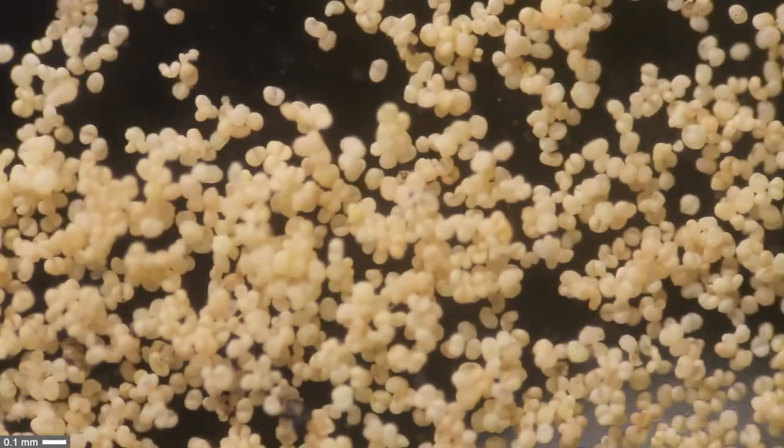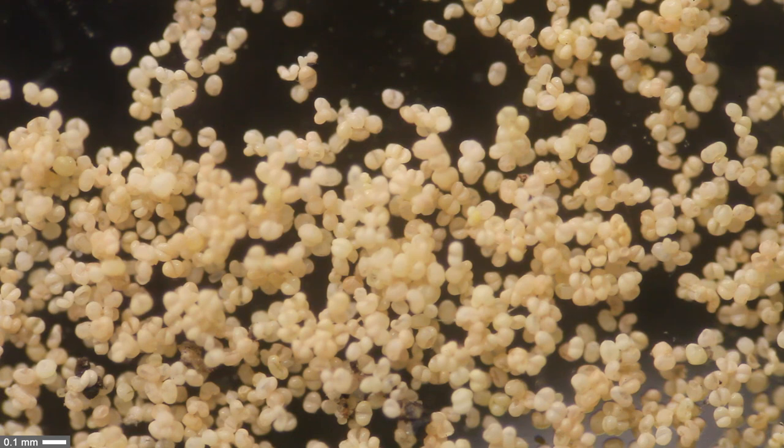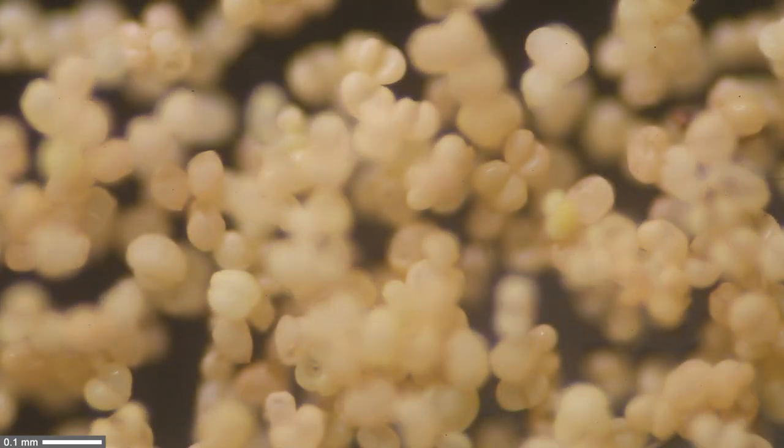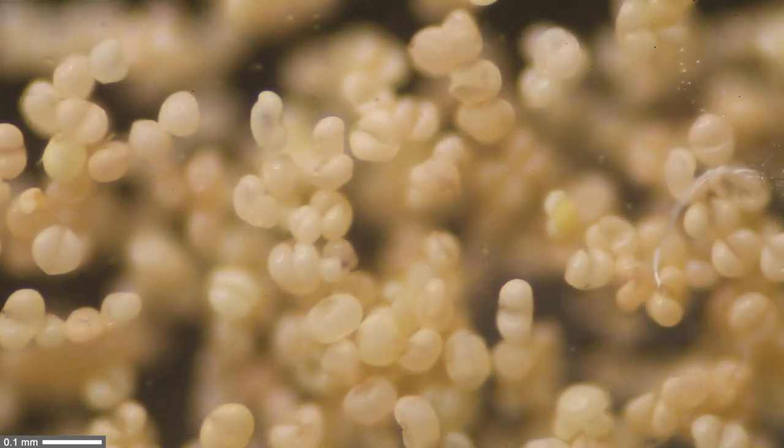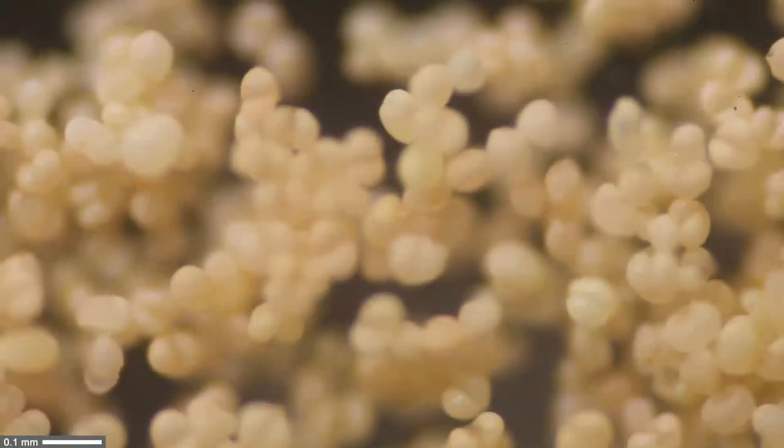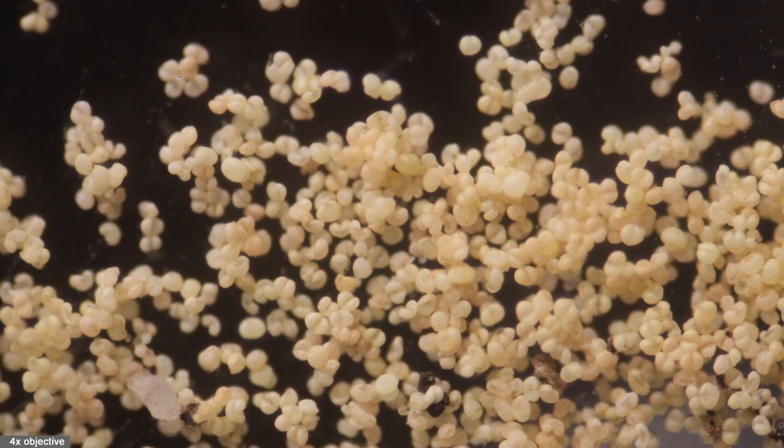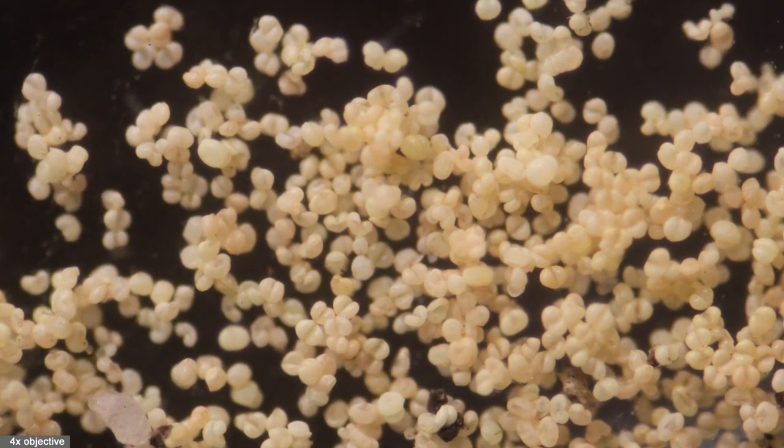That is also one of the reasons why I actually used the spacer ring, because I wanted to make sure that the pollen aggregates stay as they are naturally. You also use these spacer rings if you, for example, want to use larger water organisms like water fleas and so on. You do not want them to become squashed by the cover glass, so that's why you also use spacer rings.